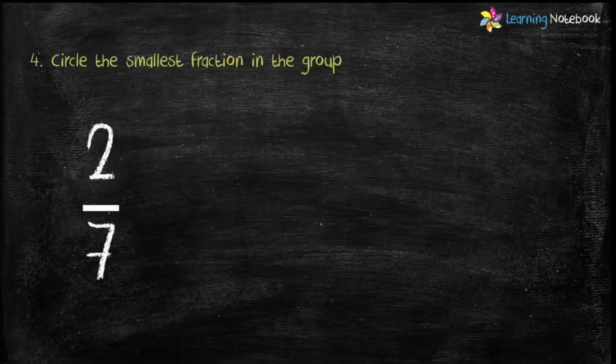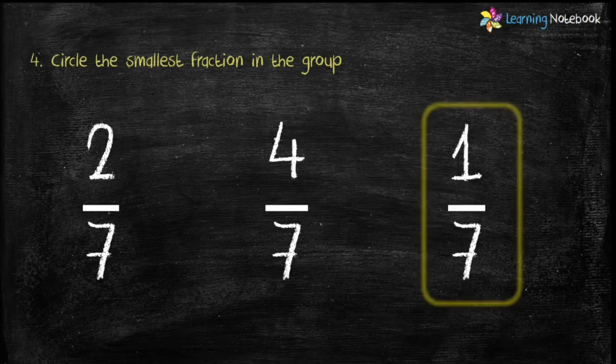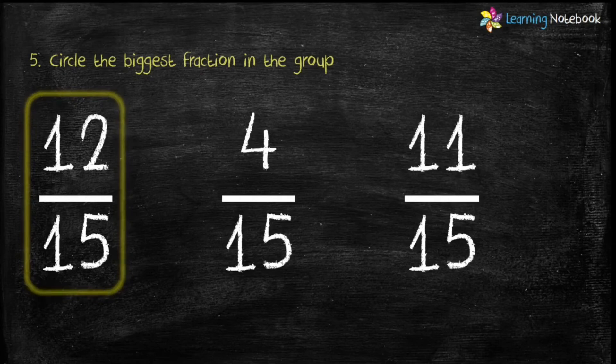Question number 4: circle the smallest Fraction in the group. Since denominators of all these 3 Fractions are same and 1 is the smallest numerator, Fraction 1 by 7 is the smallest Fraction in the group. The last question: circle the biggest Fraction in the group. Again, denominators of all these 3 Fractions are same and 12 is the biggest numerator. Therefore, Fraction 12 by 15 is the biggest Fraction in the group.